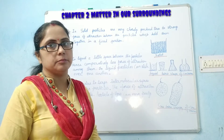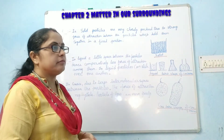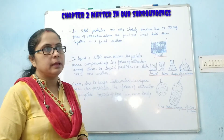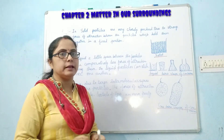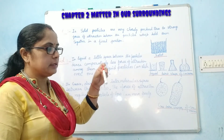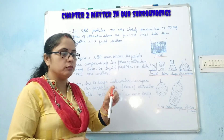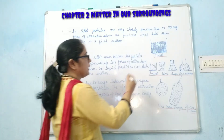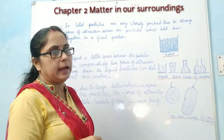In the case of solid, solid particles are very close to each other due to the strong force of attraction among them. The intermolecular space between the particles is very less or negligible. So the particles of solid are fixed in a position — they cannot move from one position to another. Therefore solid particles are arranged in a manner and they have a rigid shape and fixed volume.